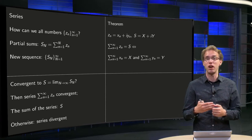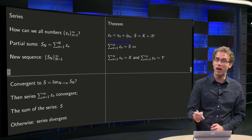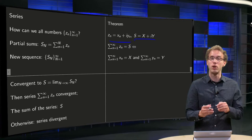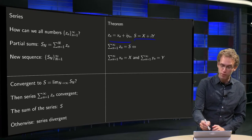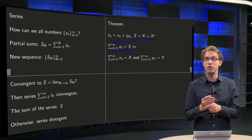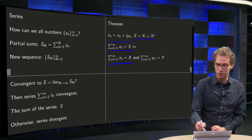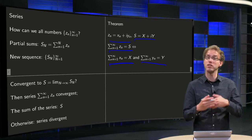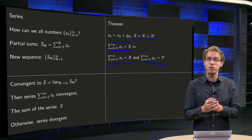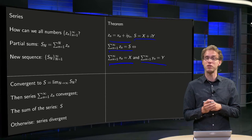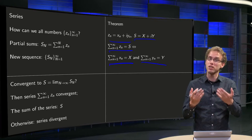Since sequences are basically the same in the real and complex case, series are as well. If you write Z_N as X_N plus iY_N, and write the sum S as its real and imaginary parts X plus iY, then the series sum from N=1 to infinity of Z_N equals S if and only if the sum of X_N equals X and the sum of Y_N equals Y. This is exactly the theorem that a sequence converges if and only if its real and imaginary parts converge — and since a series is a sequence of partial sums, the same holds for series.